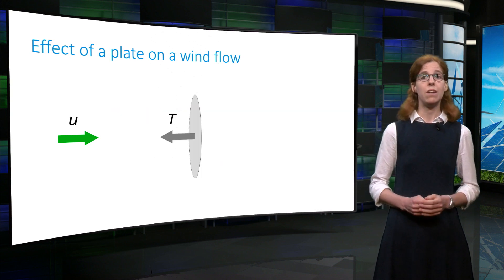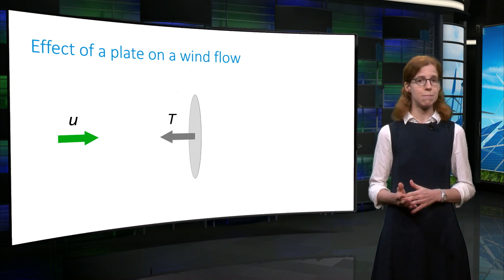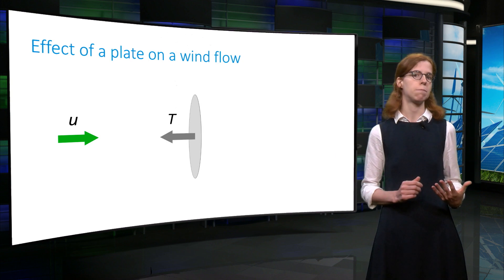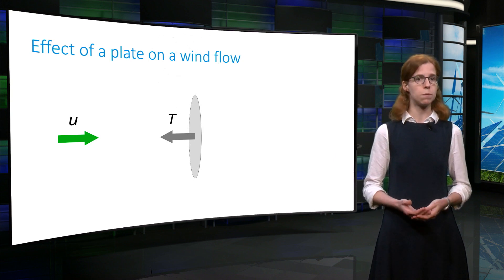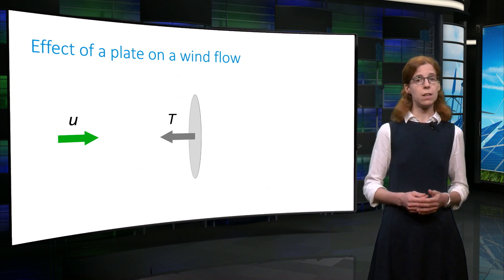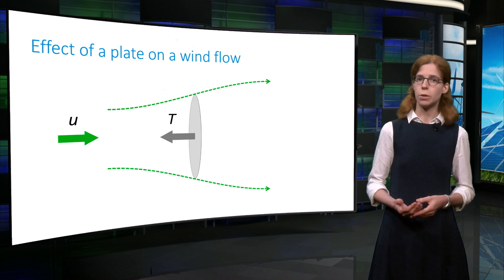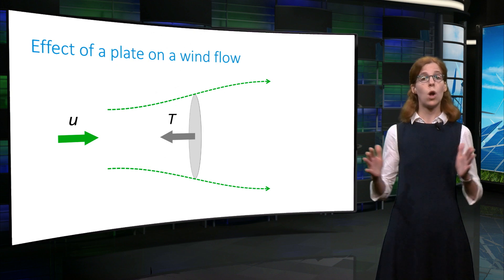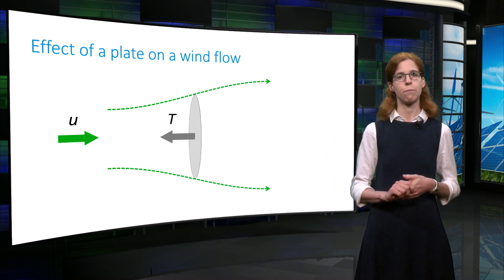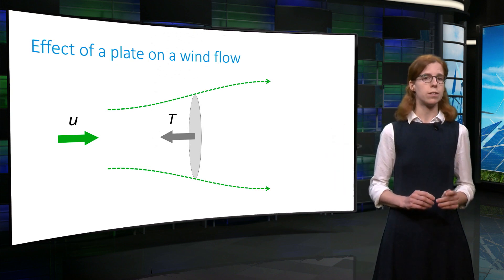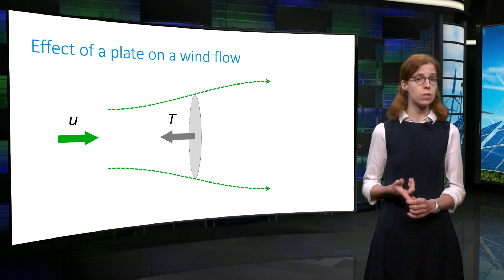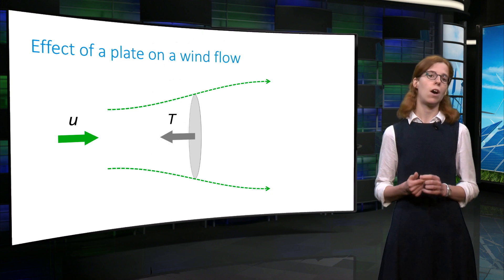By contrast, if the disk is fixed, it tends to oppose the wind flow by exerting a force on it, and the flow is disturbed. In particular, the flow is slowed down by this force T, and at the same time, it tends to go around the disk. Energy can be extracted from the flow if both the force T and the velocity just behind the disk are non-zero.